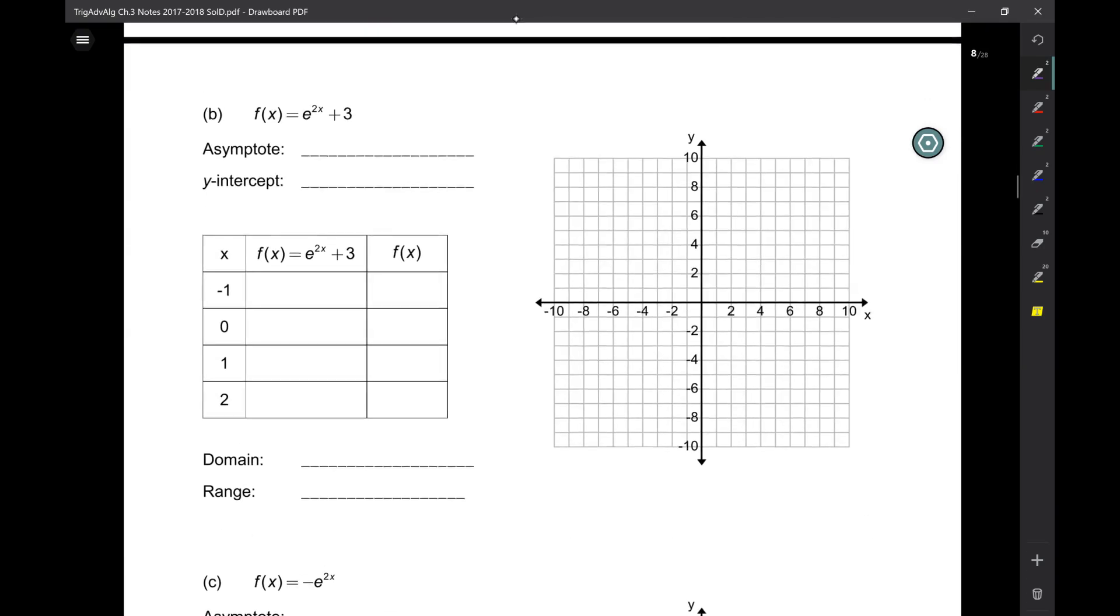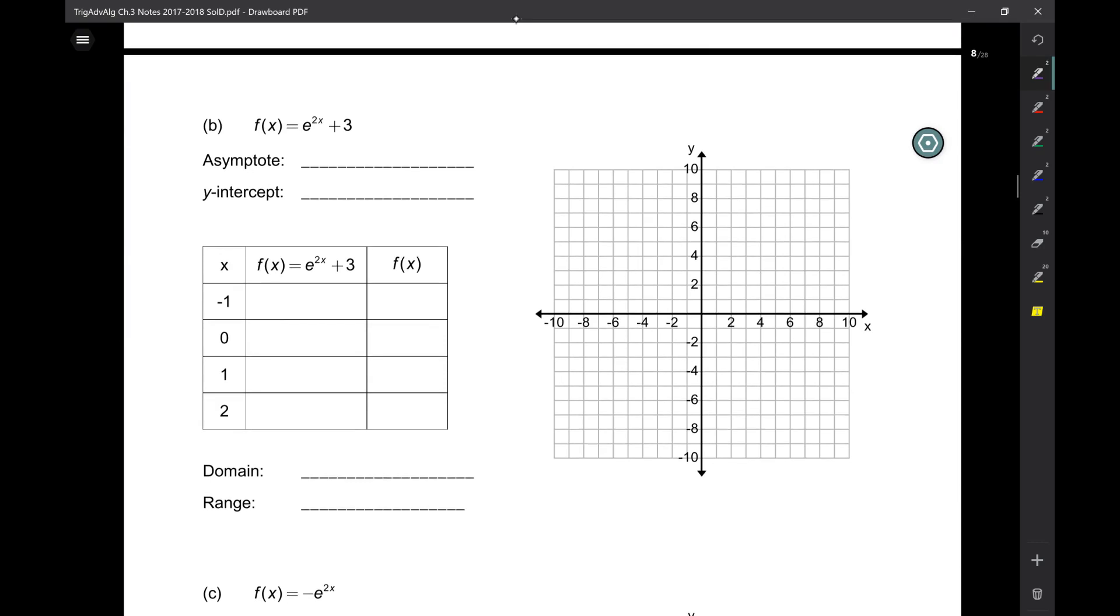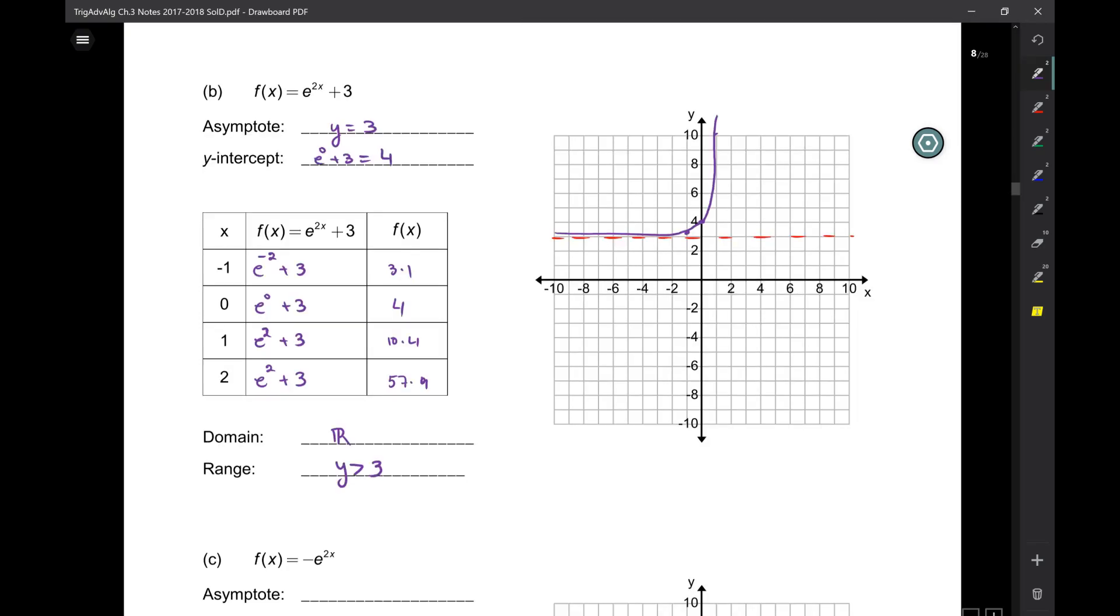I'm going to ask you guys to do this one. You're going to put in the asymptote and the y intercept, fill in the chart, and graph. And I'll stop this for a little bit. The range always has to be y is greater than or less than the asymptote. Fantastic.